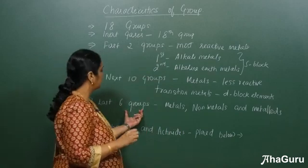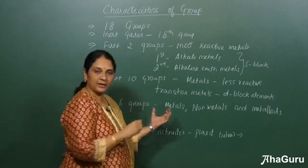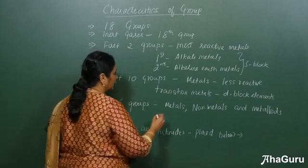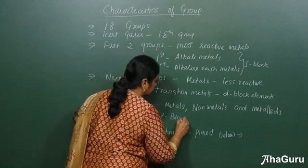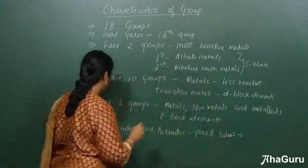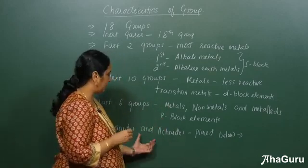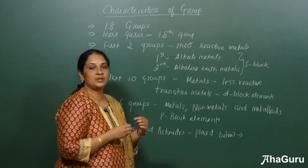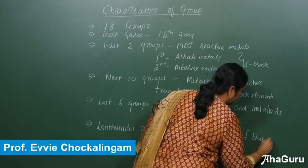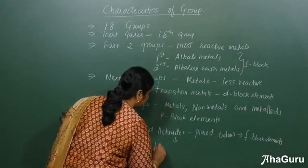The last six groups contain metals, non-metals, and metalloids. In these elements the last electron enters the p-subshell, so they are also called the p-block elements. The lanthanides and actinides are placed below the modern periodic table, and here the electrons enter the f-subshell, so they are called the f-block elements. They are also called the inner transition elements.